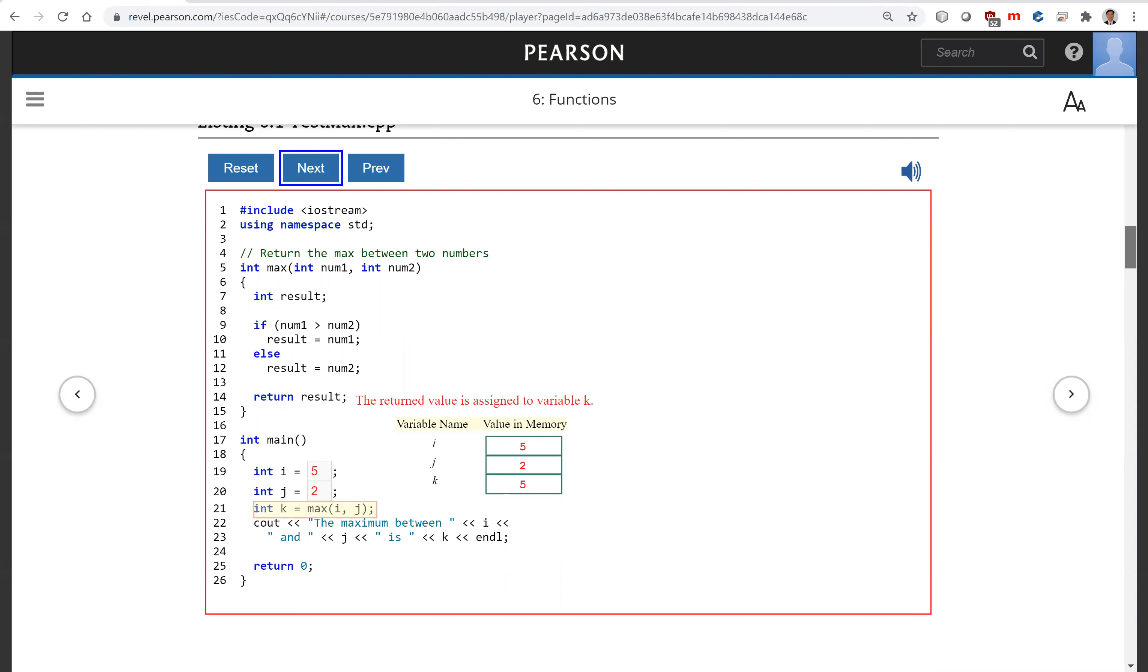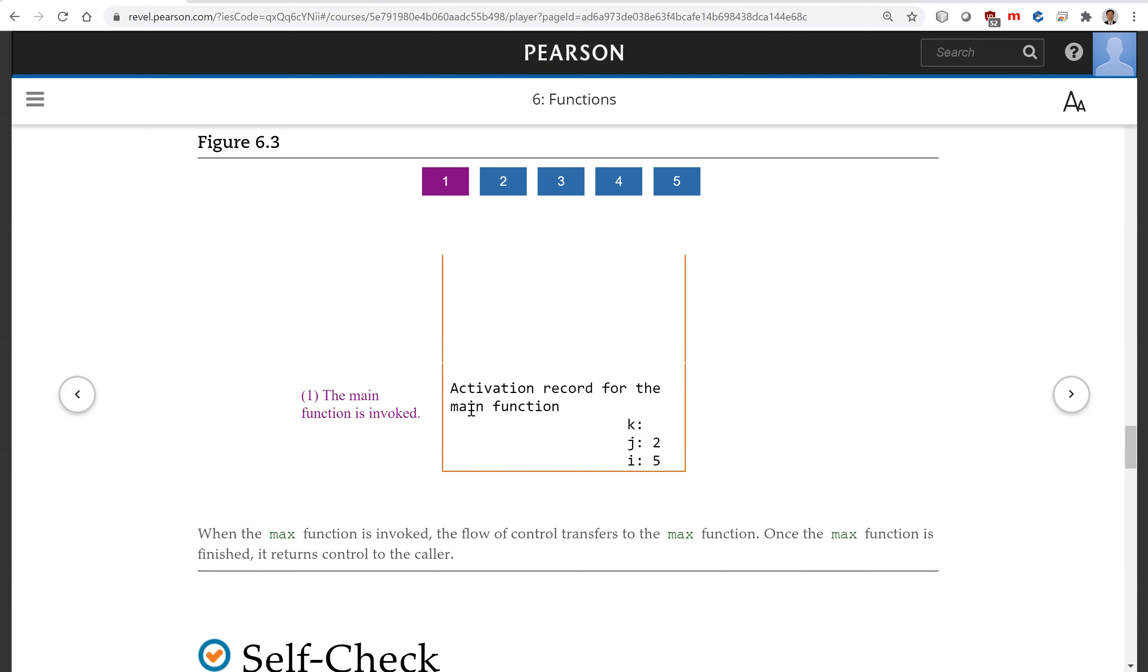Each time a function is invoked, the system creates an activation record, also called an activation frame that stores its arguments and variables for the function. And it places the activation record in the area of the memory called call stack. So this is here. See how this is executed when the main function started. The activation record for the main function is put into the stack. And next invoke the max function. The activation record for the max function is now put on top of the stack.